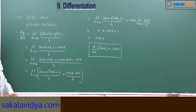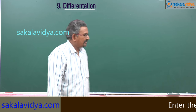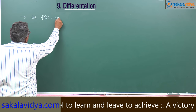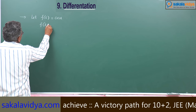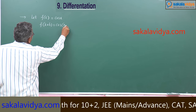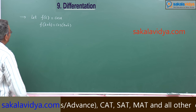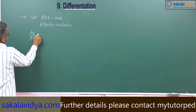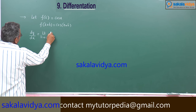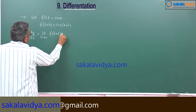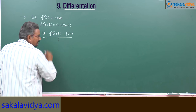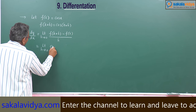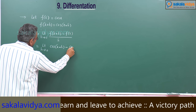Now let us find out the derivative of cos x. Let f(x) be equal to cos x. Now f(x + h) is cos(x + h). Here, dy/dx or f'(x) equals limit h tends to 0 of f(x + h) minus f(x) by h. This equals limit h tends to 0 of [cos(x + h) minus cos x] by h.